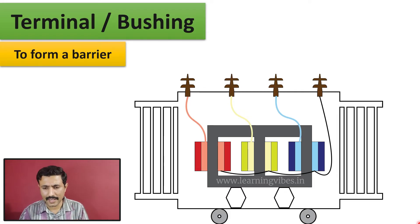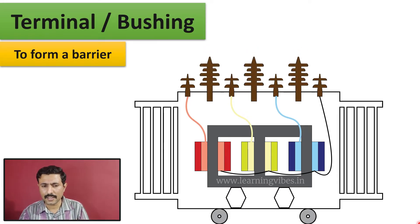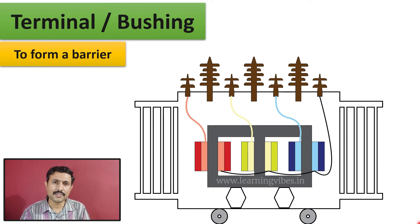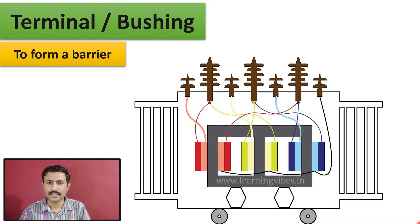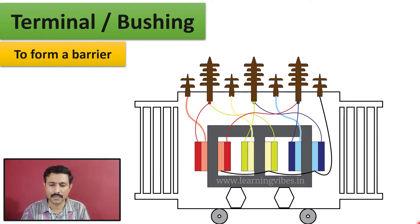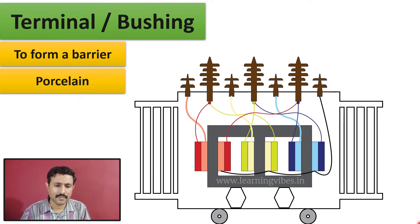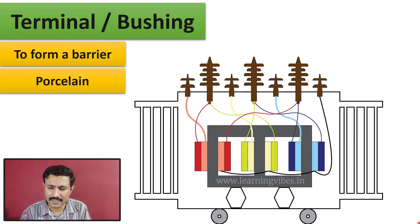On the high voltage side, the high voltage terminals or bushings are a little larger because of the higher voltage level. The connection of HV is in delta. R and Y are clubbed together and create R phase; Y and B club together and create Y phase; B and R club together and create B phase — this is how the R, Y, B delta connection is formed. These bushings are made up of porcelain material or epoxy resin.